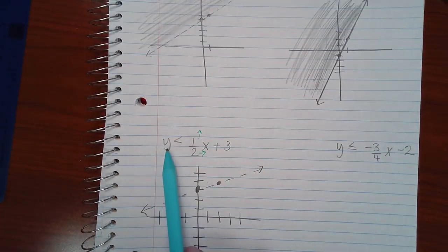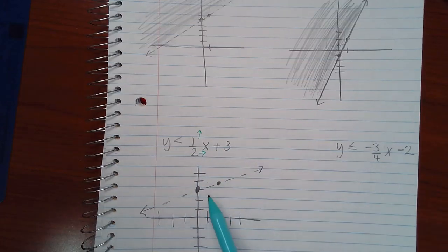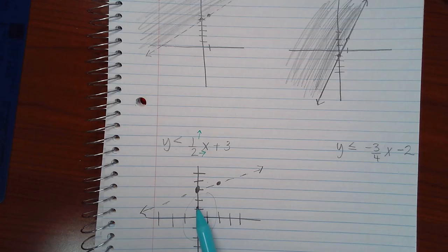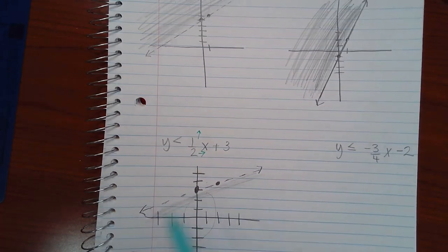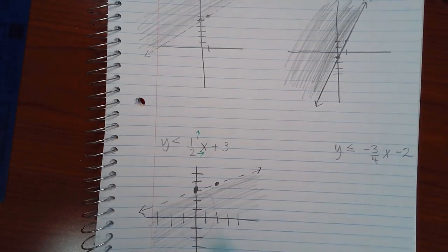And now this time, I want to shade the y values that are less than the line. These y values are below the line. Therefore, these y values are less than the line. So this is the side of the line that I want to shade.